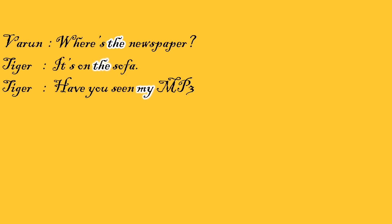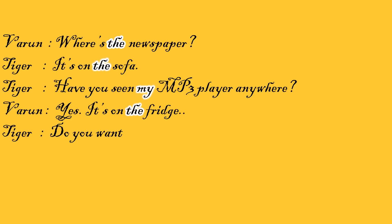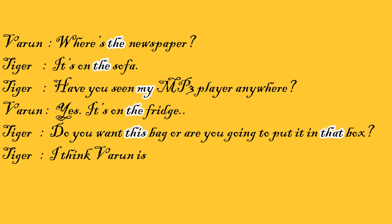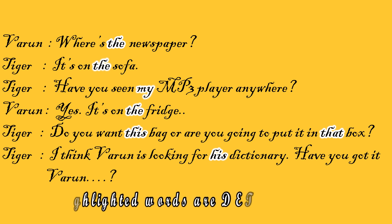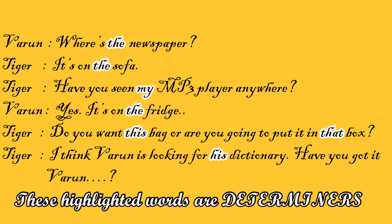Well, here in this conversation, we find the words just before the nouns — like the newspaper, the sofa, my MP3 player, the fridge, this bag, that box, his dictionary. All these words are called determiners.